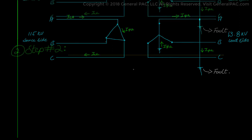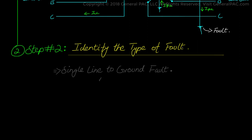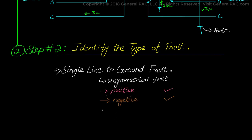Next we move to step number 2, which asks us to identify the type of fault involved. We have a single line to ground fault, which is an unsymmetrical fault — meaning an unbalanced fault type. This type of fault produces all sequence quantities: positive, negative, and zero sequence components for both current and voltage quantities.